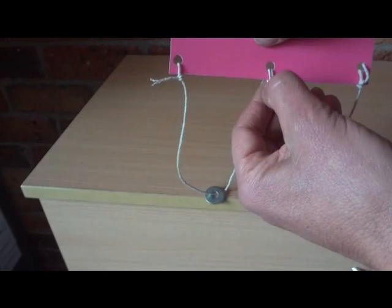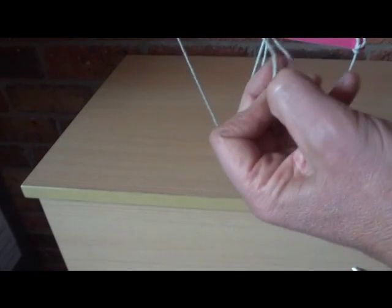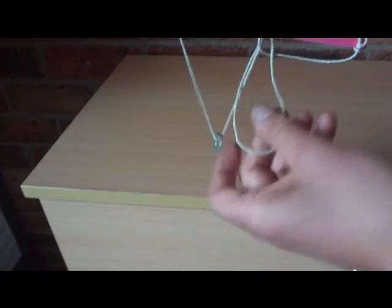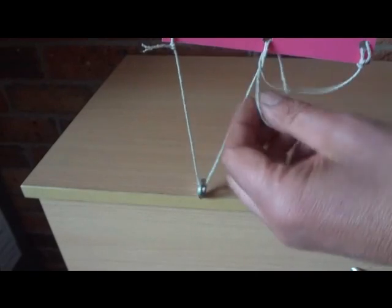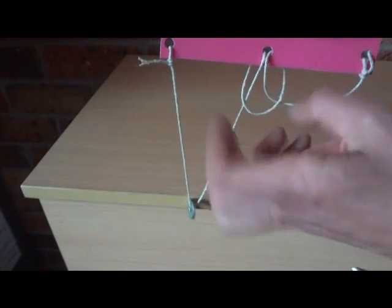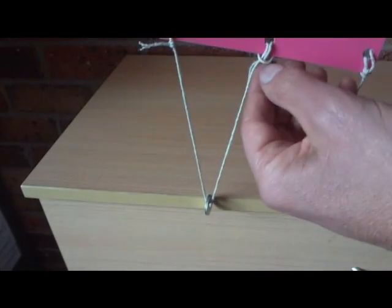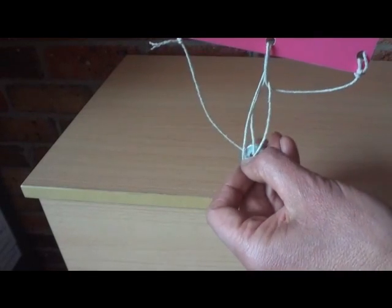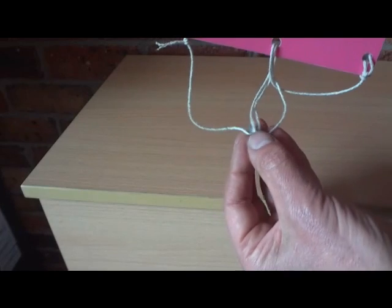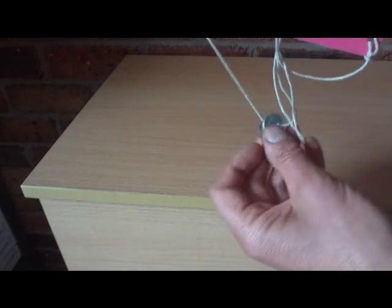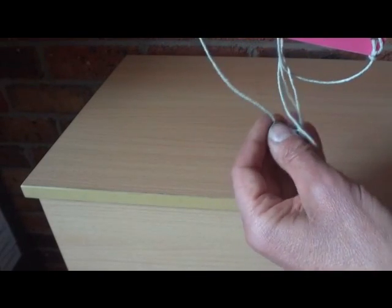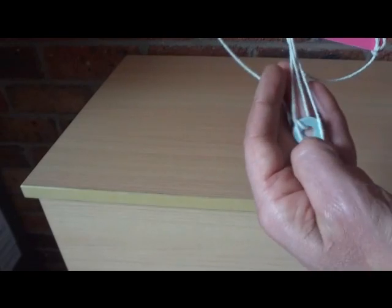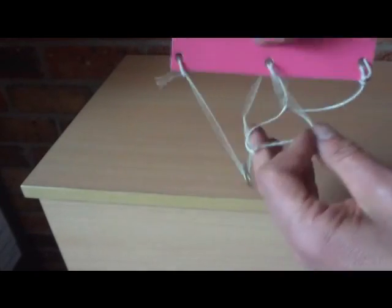Now to get that one washer back to the other side, we do the same thing again. We pull that one little loop there at the front, pull that out, and pass one of the washers through that loop. There we go, a bit hard to do with one hand.